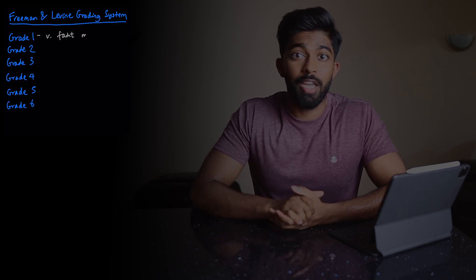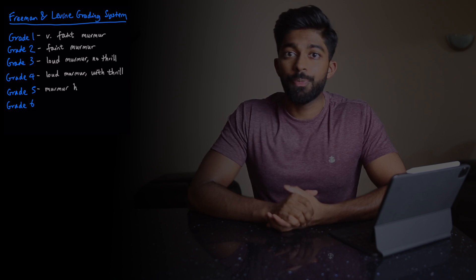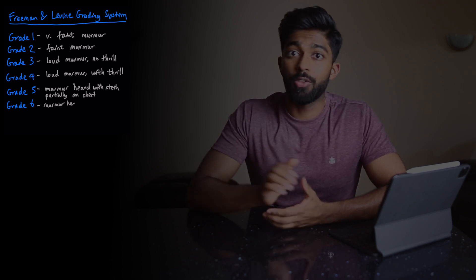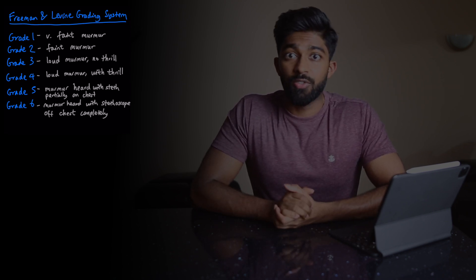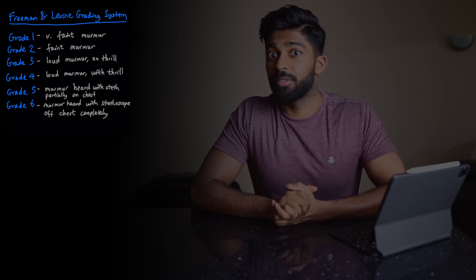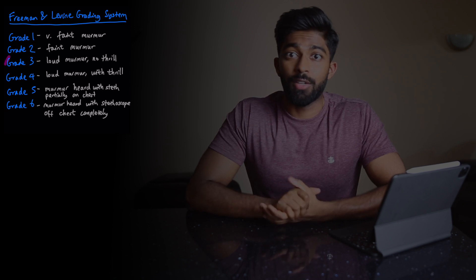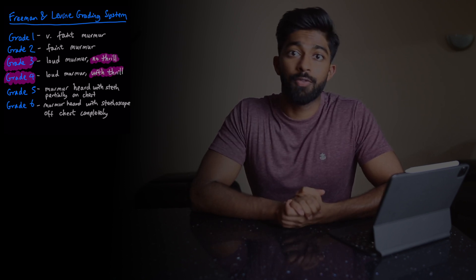Just on grading murmurs — from the presentation I graded this as grade 3 aortic stenosis. All heart murmurs are graded according to the Freeman and Levine grading system, from grade 1 to grade 6. Grade 1 is the faintest of faint murmurs, grade 2 is a faint murmur, grade 3 is a loud murmur without a thrill, grade 4 is a loud murmur with a thrill, grade 5 is heard with the stethoscope only partially on the chest, and grade 6 is heard with the stethoscope completely off the chest. Grades 5 and 6 are super rare. If you hear a murmur you can be pretty safe it's grade 3 or 4 — if there's a palpable thrill it's grade 4, if not it's grade 3.